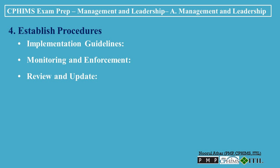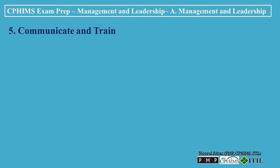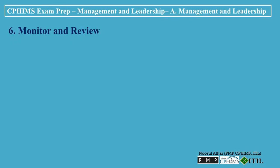5. Communicate and train. Communication plan: develop a plan for communicating policies and procedures to all relevant stakeholders, ensuring that everyone is aware of their responsibilities. Training programs: implement training programs to educate employees on the importance of the policies and procedures, how to comply with them, and the implications of non-compliance.